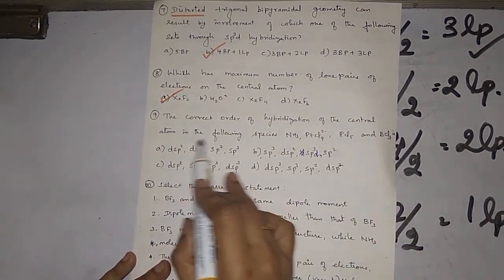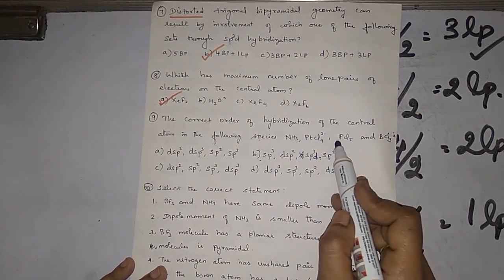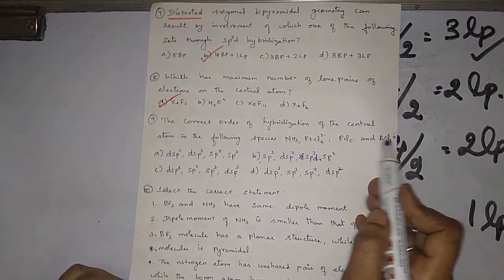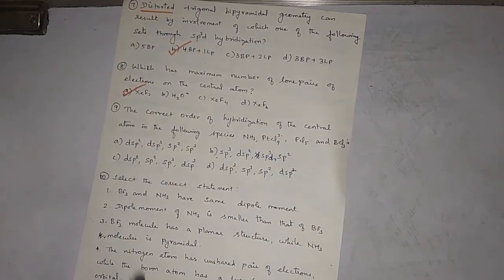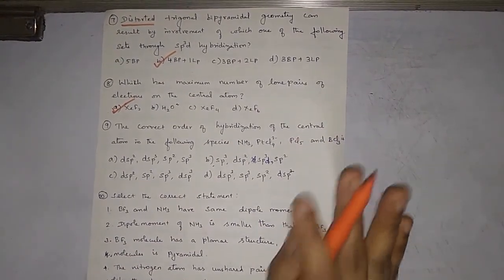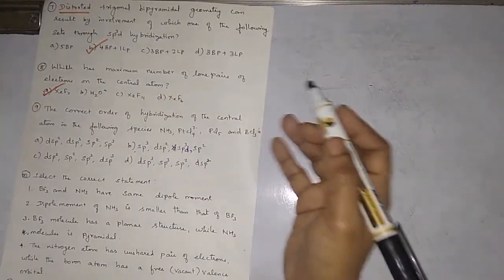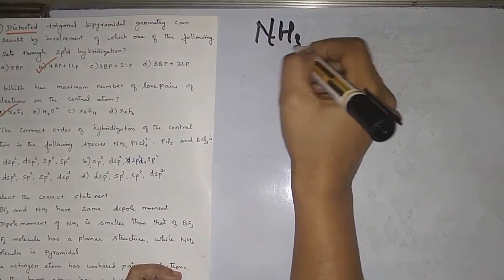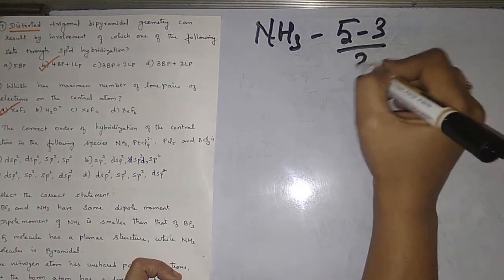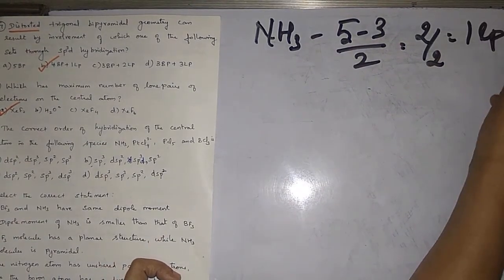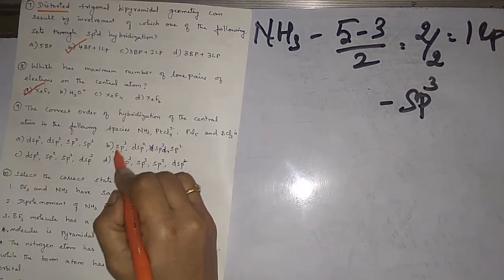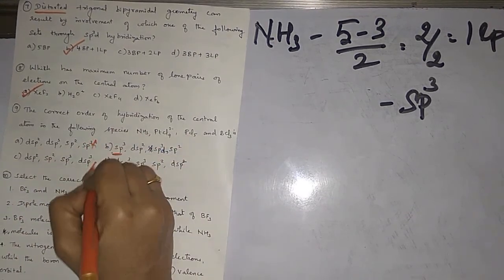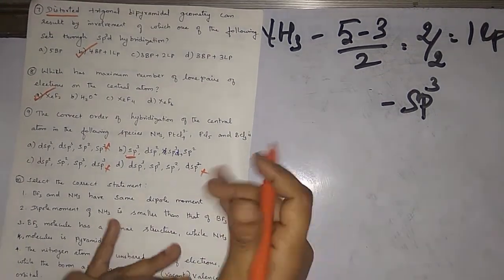Next question: the correct order of hybridization of the central atom in NH3, [PtCl4]²⁻, PCl5, and PCl3. For such questions, check one or two known compounds. Ammonia: 5 − 3 ÷ 2 = 1 lone pair plus 3 bonded atoms = 4, so sp3. Only one option starts with sp3 for ammonia, so you can eliminate the other three options directly.